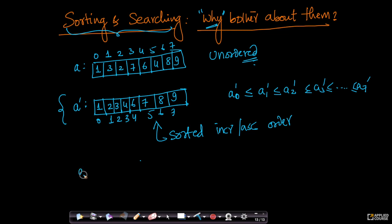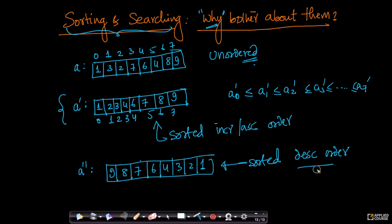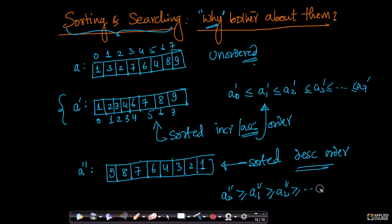Similarly, there is something called descending order. Suppose I have array A-double-dash, where elements are organized as 7, 6, 4, 3, 2, 1. This array is also sorted, but sorted in descending order. In descending order, A-double-dash[0] is greater than or equal to A-double-dash[1], greater than or equal to A-double-dash[2], and so on through A-double-dash[7]. Whenever we say sorting without specifying, we by default mean ascending order.